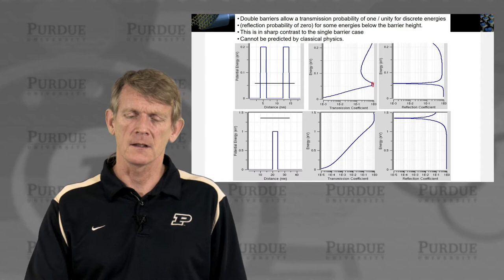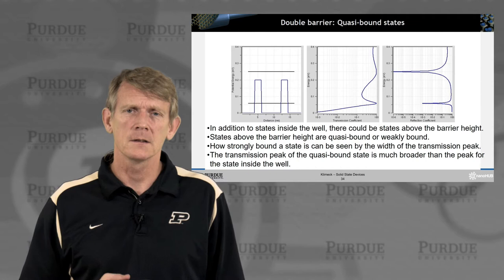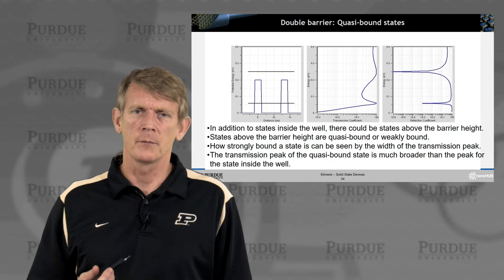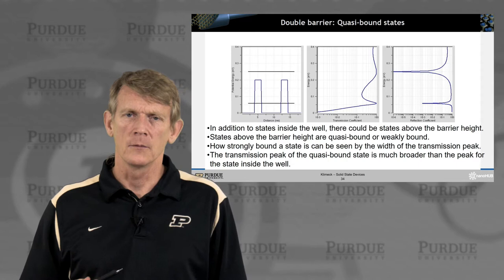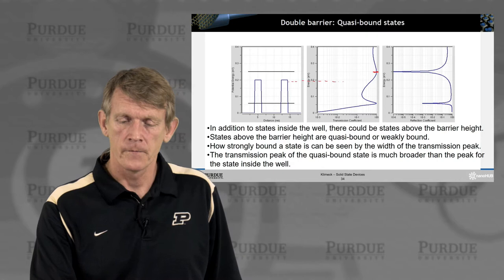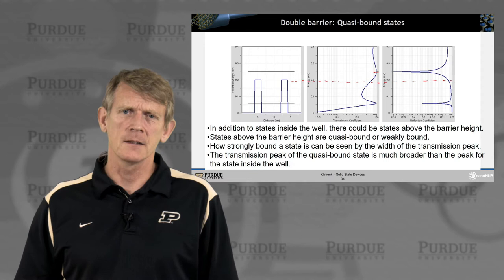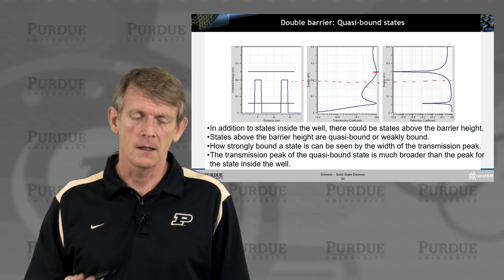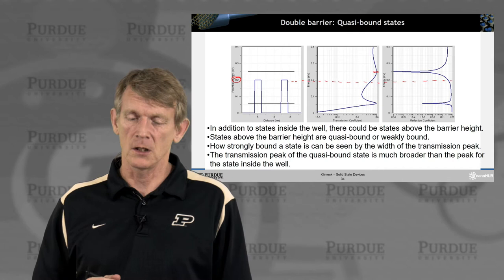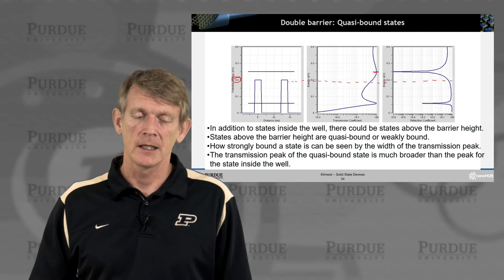Looking at higher energies, similar to what we saw in the single barrier structure, there are resonant-like features above the barrier regions, and you can get perfect transmission at certain energies, but you also don't get perfect transmission across the entire above-barrier range. So again, there is an energy modulation — an energy dependence — for transmission above the barrier. We looked at a pretty shallow barrier of just 0.2 eV tall; now let's make the barrier heights taller and see what else we can observe.